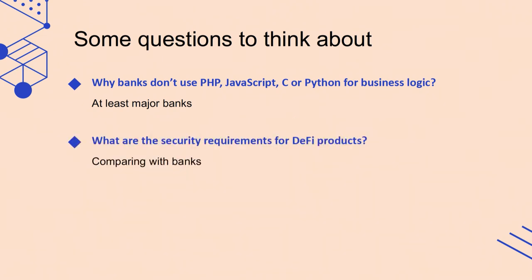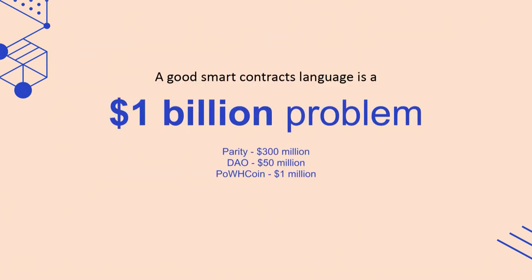The next question is: what are the security requirements for DeFi products? Security requirements for DeFi products are much higher than for banks. Why? Because if something goes wrong with the usual banking system, we can just revert the transaction. We can do it with centralized systems. We cannot do the same with decentralized finance systems. So security requirements for DeFi products are even higher than for banks. I think that after this argument, I can say that a good smart contract language is a one billion dollar problem, because there were at least three issues with smart contracts which led to more than $300 million in damages.